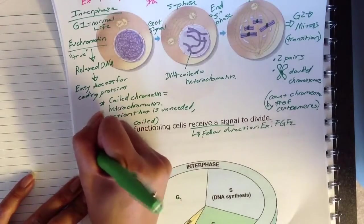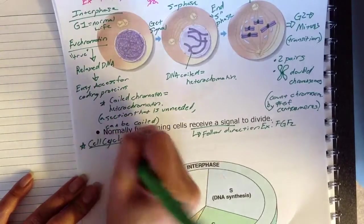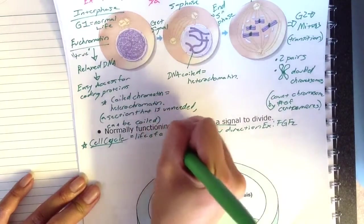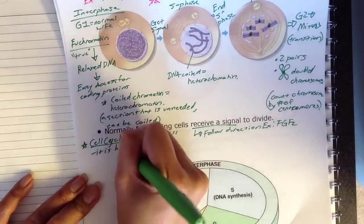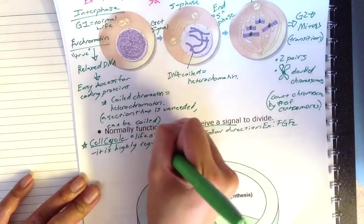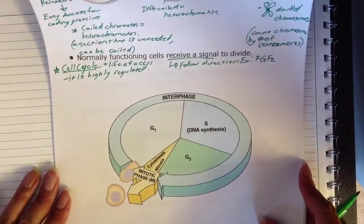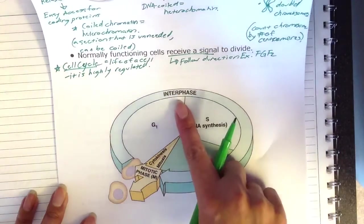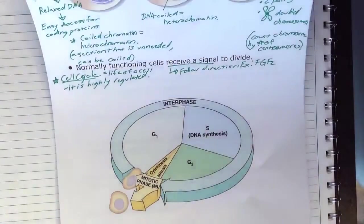This image that you see is the cell cycle, and the cell cycle is basically the life of a cell, and it is highly regulated. So what do you see, or what do you need to be able to understand out of this image here? First thing you should notice is that we have a couple labels: interphase, G1, S, G2, and mitosis.